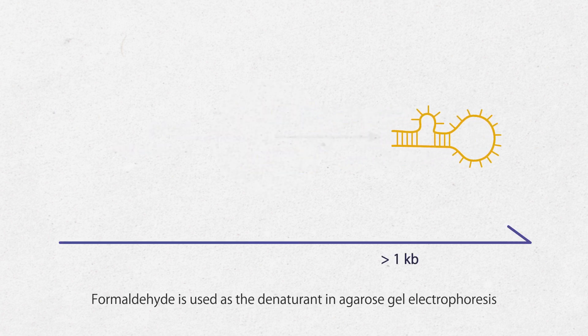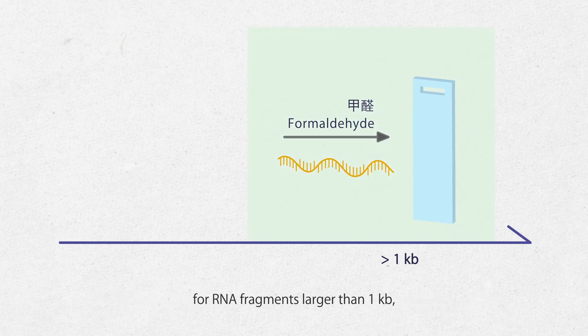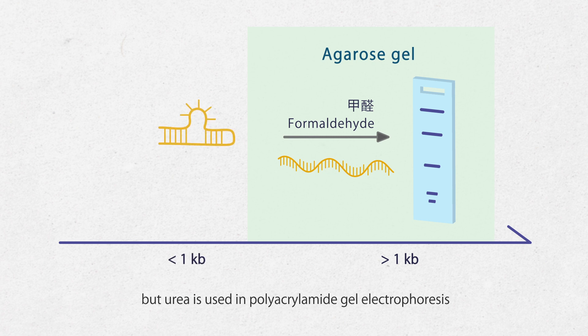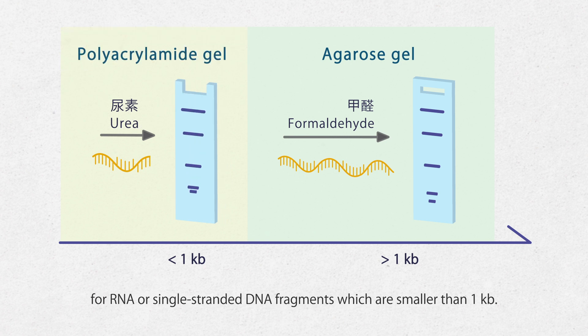Formaldehyde is used as the denaturant in agarose gel electrophoresis for RNA fragments larger than 1,000 base pairs. Urea is used in polyacrylamide gel electrophoresis for RNA or single-stranded DNA fragments which are smaller than 1,000 base pairs.